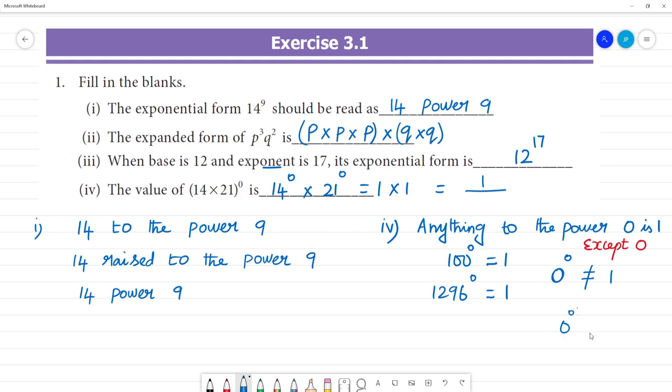If 0 to the power 0, then what is 0 to the power 0? 0 to the power 0 is not equal to 1. 0 to the power 0 is 0.